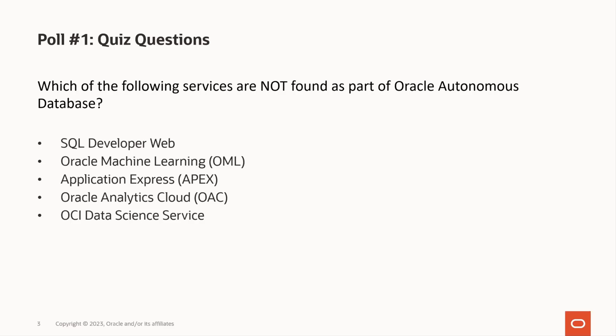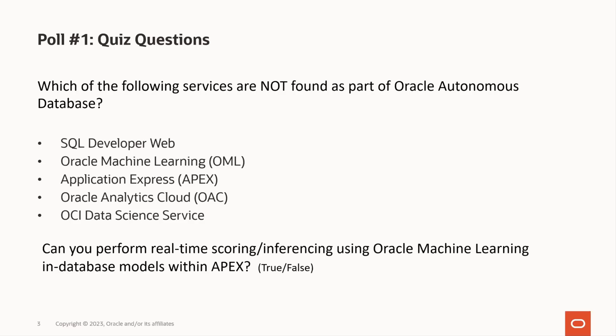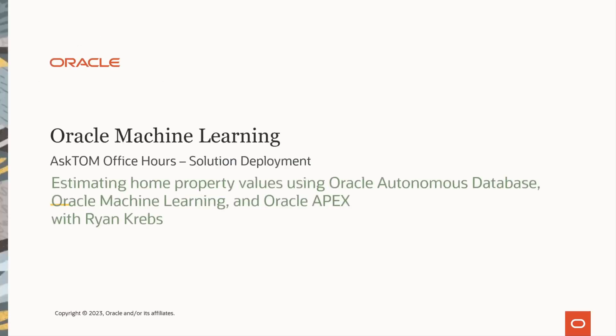The other component not part of Autonomous Database is OCI Data Science Service. OCI Data Science Service accesses data from Autonomous Database, but it's not a component of Autonomous Database. SQL Developer Web, Oracle Machine Learning, and Application Express are all included with Autonomous Database. For our second question: can you perform real-time scoring and inferencing using Oracle Machine Learning in-database models from APEX? Indeed, 100% true — you can perform real-time scoring and inferencing using Oracle Machine Learning in-database models from APEX.